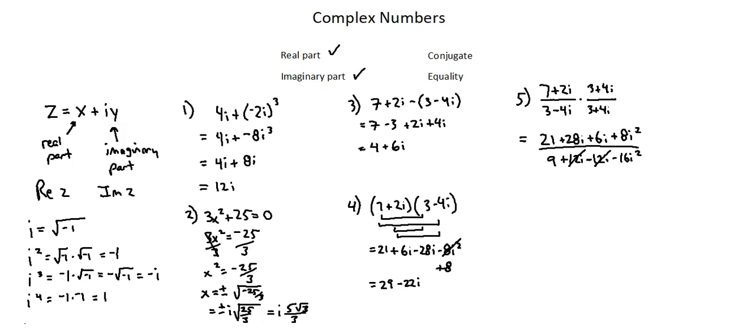We continue to simplify. I'll change plus eight i squared to minus eight because i squared is negative one. I'll change negative 16 i squared to plus 16 for the same reason. Now in the numerator, 21 minus eight is 13. 28i plus 6i is plus 34i. In the denominator, 9 plus 16 is 25.